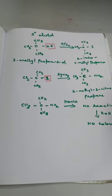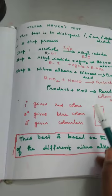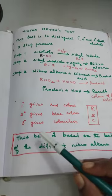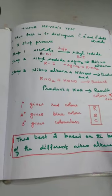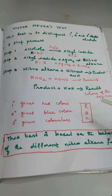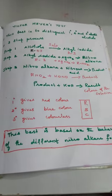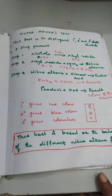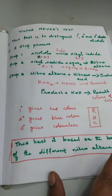By means of color formation, you can identify primary, secondary, and tertiary alcohols using Victor Meyer's Test. Primary alcohol gives red, secondary alcohol gives blue, and tertiary alcohol gives colorless. An easy trick to remember this is the mnemonic RBC. That is all about Victor Meyer's Test. If you have any doubt, you can ask in the comments.